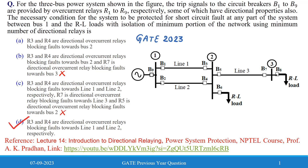Option D states that R3 and R4 are directional overcurrent relays blocking fault towards line 1 and line 2 respectively. This is more specific and clear, so Option D is the correct answer for this problem.